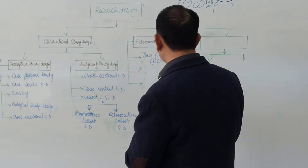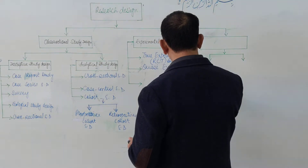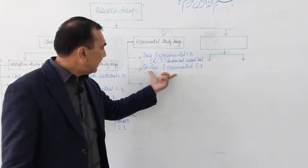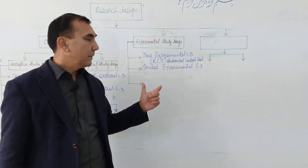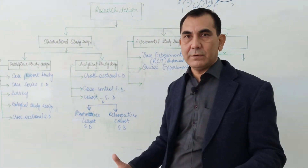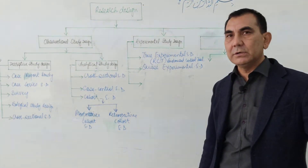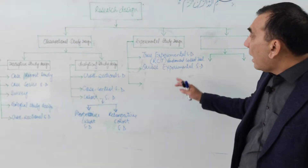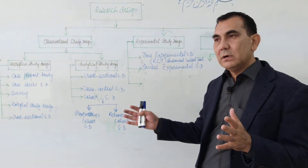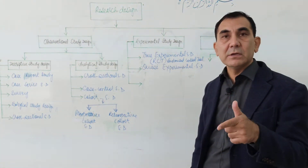The second type is called the quasi-experimental study design. It is a type of experimental study design, but it is a little bit different from the RCT. In the quasi-experimental study design, the researcher selects the sample from the population in a non-randomized way, and also allocates the experimental and control groups in a non-randomized way. Sometimes the experimental group and control group are not equal, or sometimes the researcher will not select a control group at all.